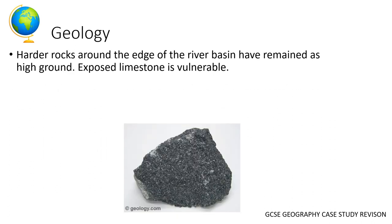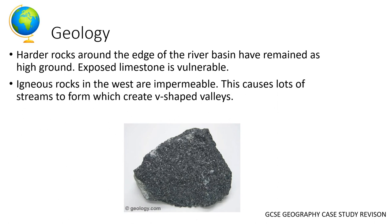Regarding geology, harder rocks around the river basin have remained. One example is exposed limestone, though in the west the rocks are more generally igneous and impermeable. Because these impermeable rocks mean water can't soak in — unlike permeable rocks where water soaks in underground — lots of streams form on the surface, creating the V-shaped valleys.